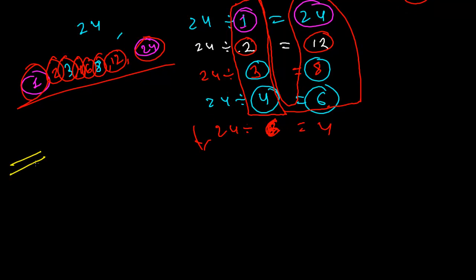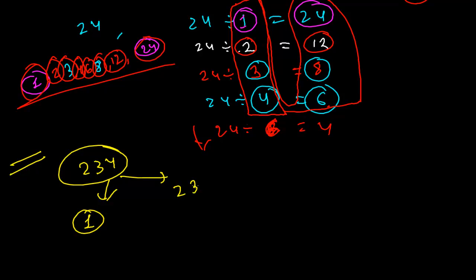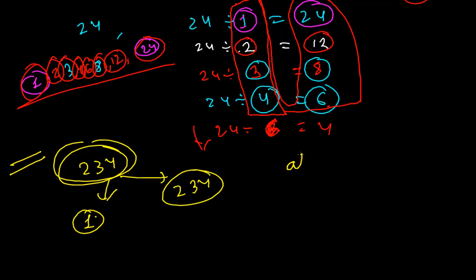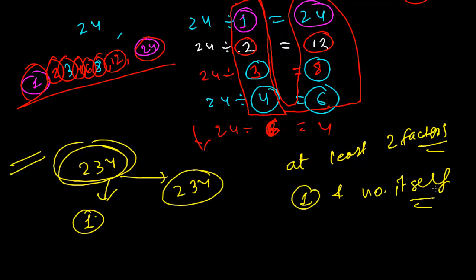One important thing to stress: for any number you take — like 234 — two factors are always confirmed. That is 1, and the number itself. Every number, whatever it is — natural number, whole number, prime, or composite — always has at least two factors: 1 and the number itself.